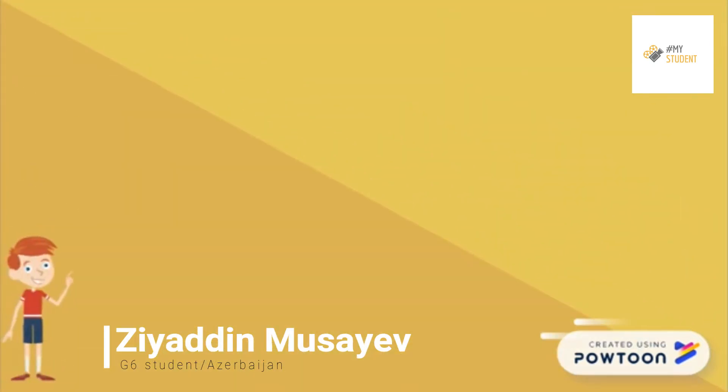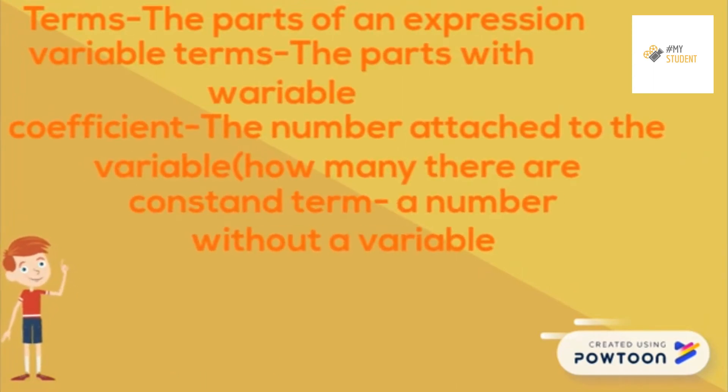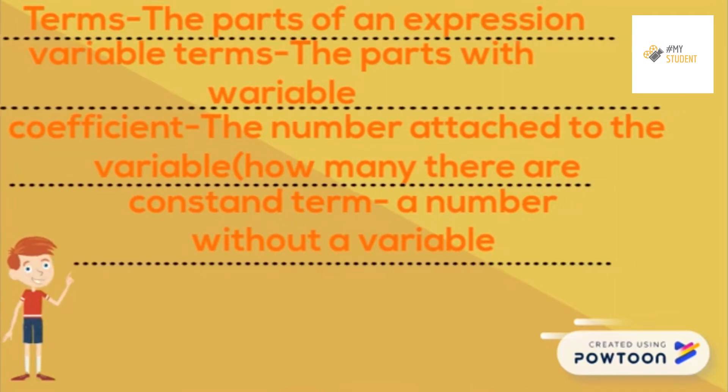Terms are the parts of an expression. Variable terms are the parts with a variable. The coefficient is the number attached to the variable, indicating how many there are. A constant term is a number without a variable.